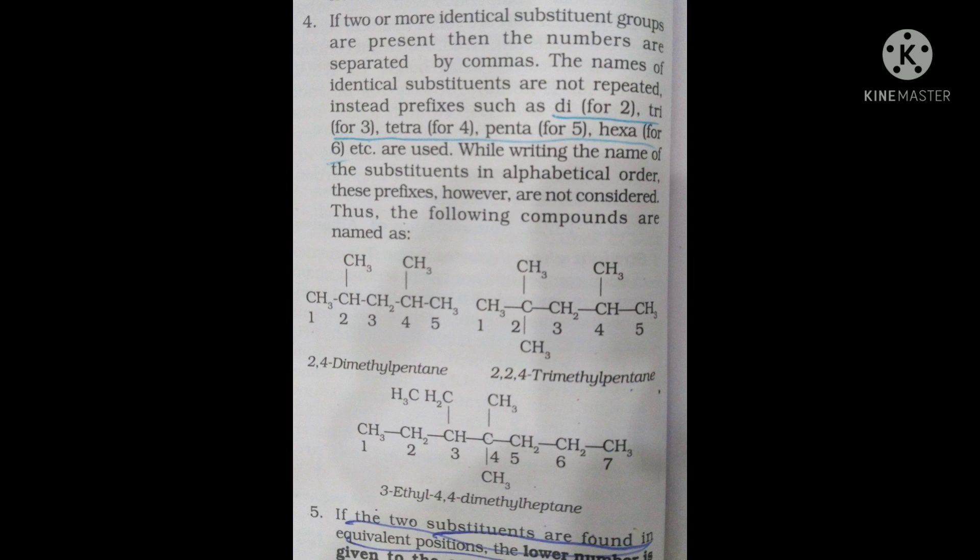Rule: If two or more identical substituent groups are present, then the numbers are separated by commas, and a multiplying prefix (di, tri) is used.